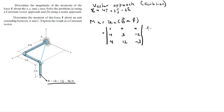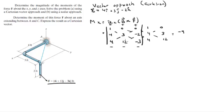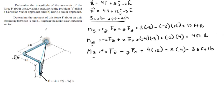Computing the positive diagonals: 1 × 3 × (-3) = -9, and the other two are 0. For the negative diagonals: (-12) × (-2) × 1 = +24, and the others are 0. So -9 + 24 = 15 foot-pounds, which matches our scalar approach exactly.